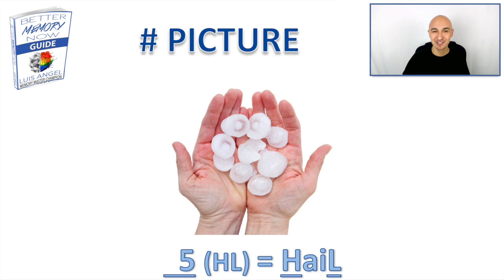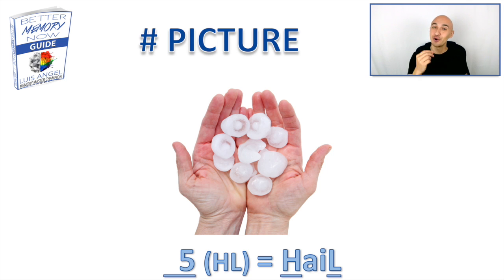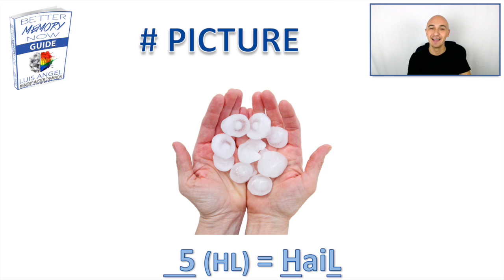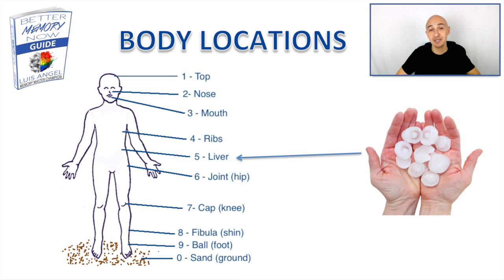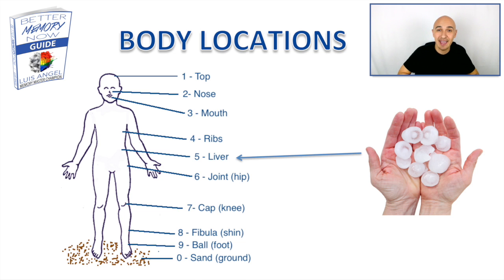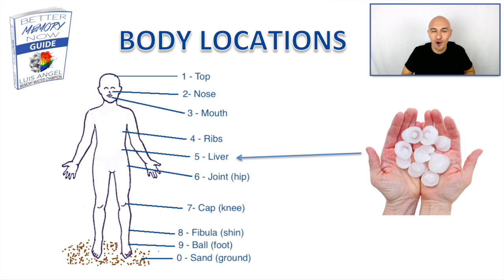Number five is hail. The five has an L sound, and with the H and a few vowels you get hail — like hailing ice balls down from the sky. Picture that on your liver. Maybe your liver is frozen cold because there's a bunch of hail pouring down on it. Feel the coldness of your liver. The more action you add, the better for you to recall it.